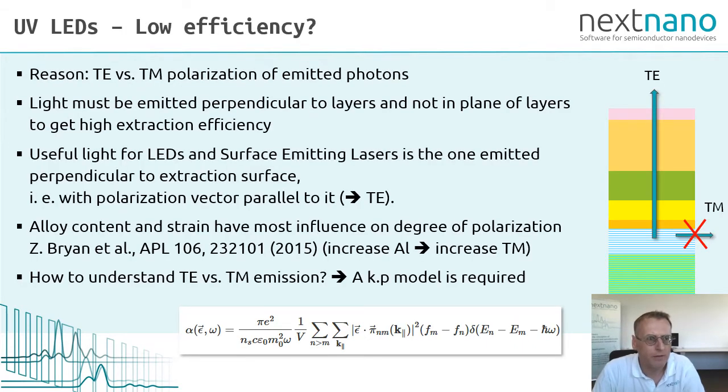The reason for the low efficiency of UV LEDs has been identified. It has to do with the polarization of the emitted photons. Light must be emitted perpendicular to the layers and not in plane of the layers to get high extraction efficiency. So the useful light for LEDs is the one emitted perpendicular to the extraction surface, that is the ones that have a polarization vector parallel to it. We call them transverse electric polarized photons.